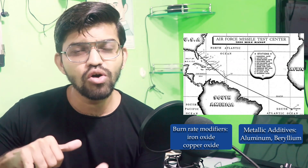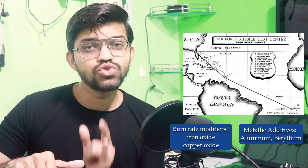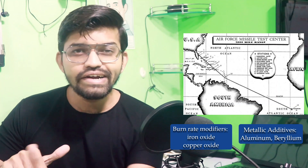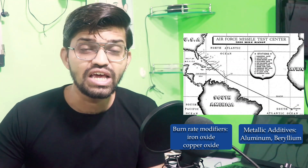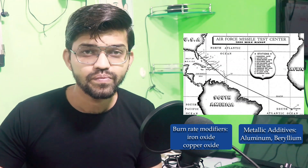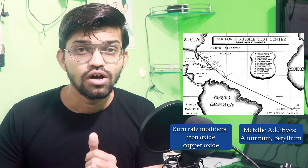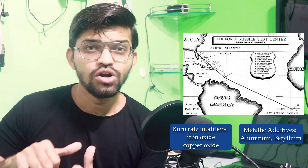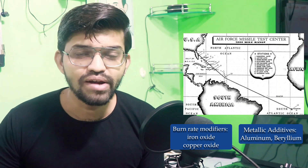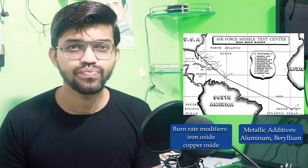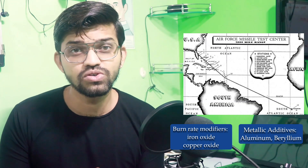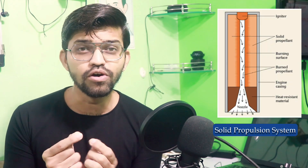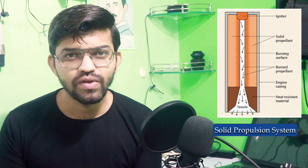Apart from that, there are the most important components called burn rate modifiers. These are extremely important: if a particular rocket needs to travel a certain distance on solid fuel, the rocket must have sufficient fuel to reach its desired destination. Burn rate modifiers allow us to control the rate of burning and the rate of combustion in the rocket engine, so that the rocket is able to reach the desired destination within its limited fuel supply. That covers the solid engine, which is used in the strap-on boosters and stages of the PSLV and GSLV.